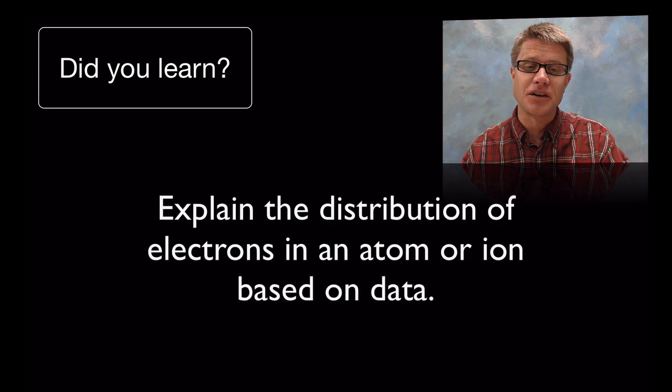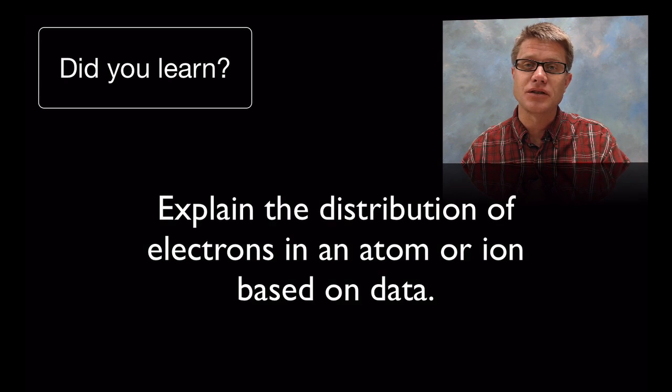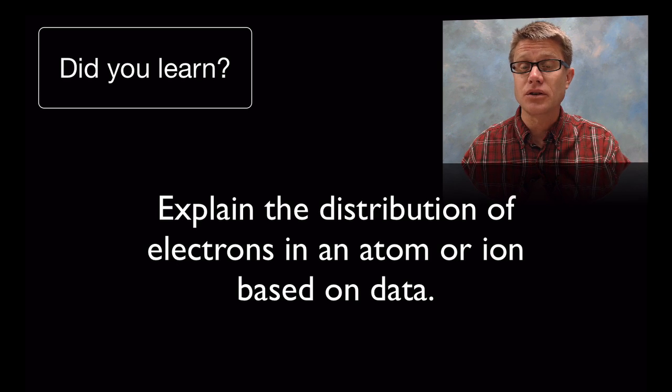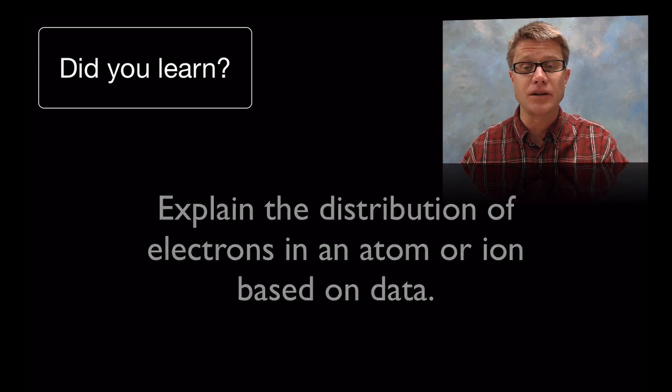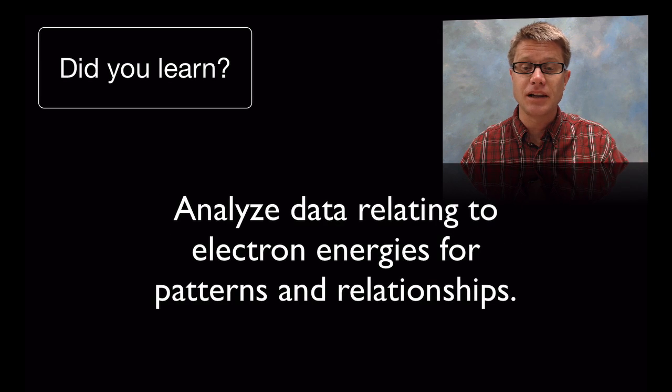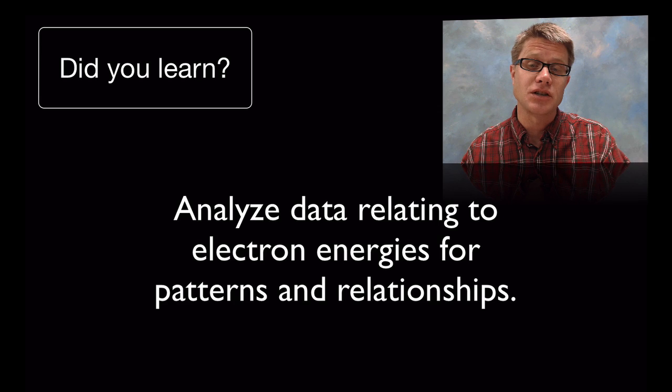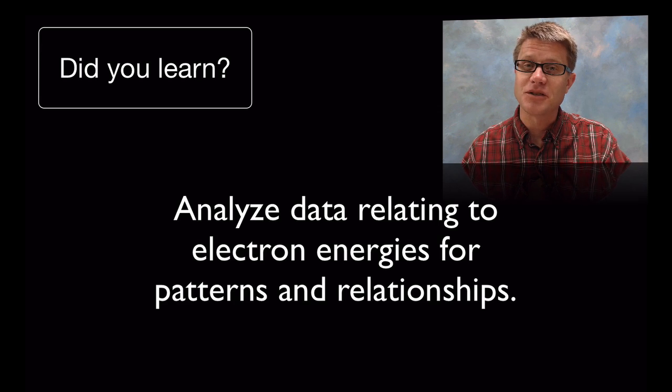So what did you learn? You should have learned that we can explain the distribution of electrons in an atom or ion based on data. And so we can predict data using Coulomb's law. And we can also verify it using PES. We can analyze the data. And we can look for patterns and relationships. And we're going to get more into those patterns and relationships in the next video. But I hope that was helpful.